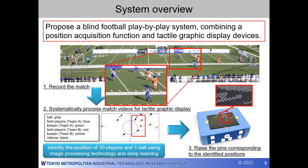First, record the match. Next, systematically process match videos for tactile graphic display. The positions of 10 players and one ball can be identified using image processing technology and deep learning. Finally, raise the pins corresponding to the identified positions. It can be projected as a bird's eye view layout of the ball and players on the field at 1/100 scale.